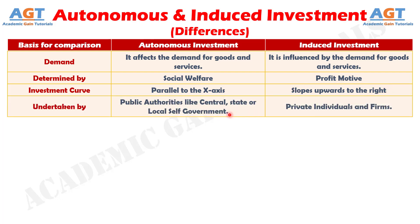Difference Number 9: Autonomous investment is generally made by the government — be it central government, state government, or local self-government — whereas induced investment is undertaken by private individuals and firms. Investment by the government or private firms in economic and social sectors comes under autonomous investment — expenditure on buildings, dams, roads, tunnels, canals, flyovers, schools, hospitals, and so forth. On the other hand, an increase in national income followed by increased consumption and demand for goods and services will prompt firms to invest in capital assets such as plant and machinery, which comes under induced investment.